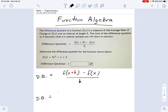So what I'm going to do is write 3 something squared plus something plus 2. And then I'm going to say minus f of x, which is minus 3x squared plus x plus 2. And then that whole mess divides by h.